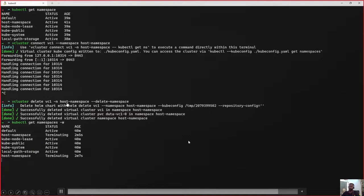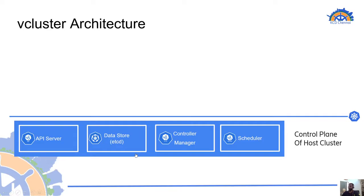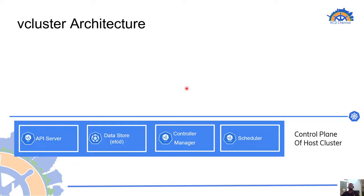And there we go — the host namespace is also removed. Now let us go through a few slides to understand what happened in the demo from the vcluster architectural perspective. I am going to walk through command by command to show the inside perspective of vcluster.